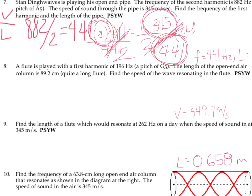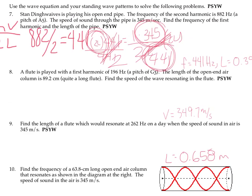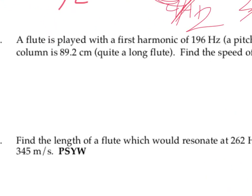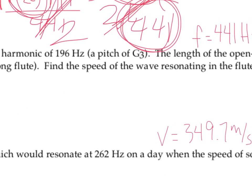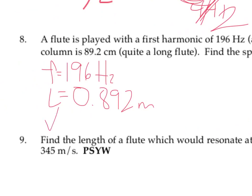On the next problem, we're told the first harmonic is 196 hertz, so we're given initially a frequency, and told the length of the column is 89.2 centimeters. It would be a good idea to just make a note of those variables, frequency, 196 hertz. The length of the air column is 89.2 centimeters, but we're not going to leave it like that. We're going to convert that into meters, 0.892 meters. And we're asked to figure out the speed of the wave, the velocity.